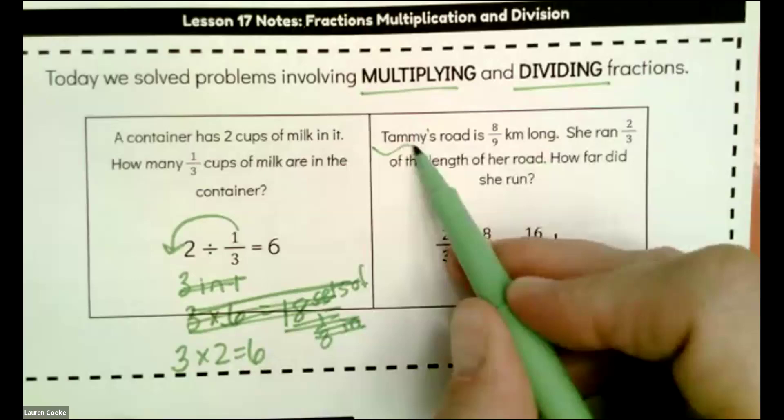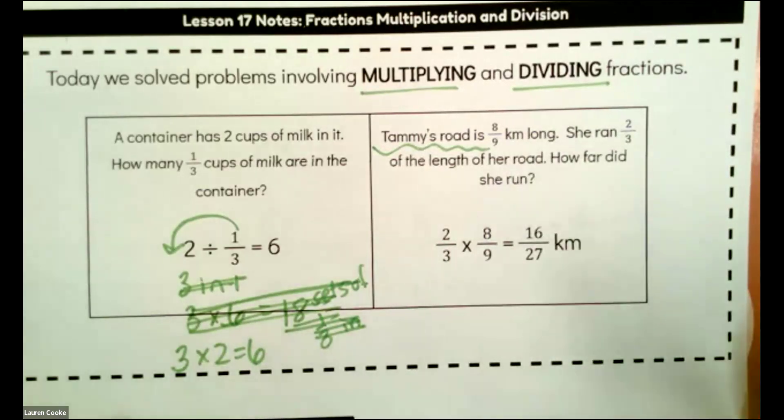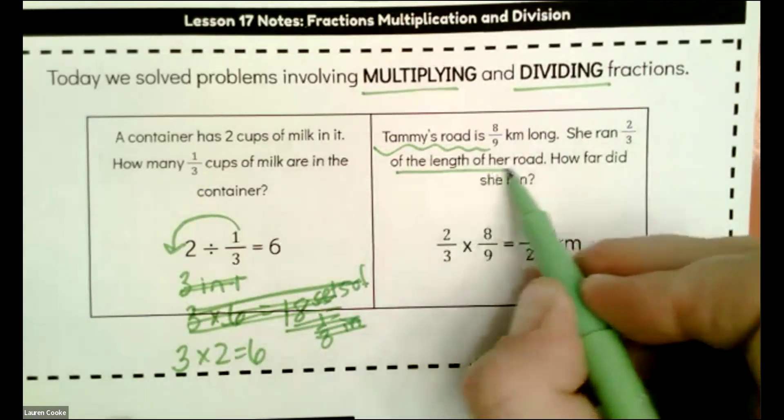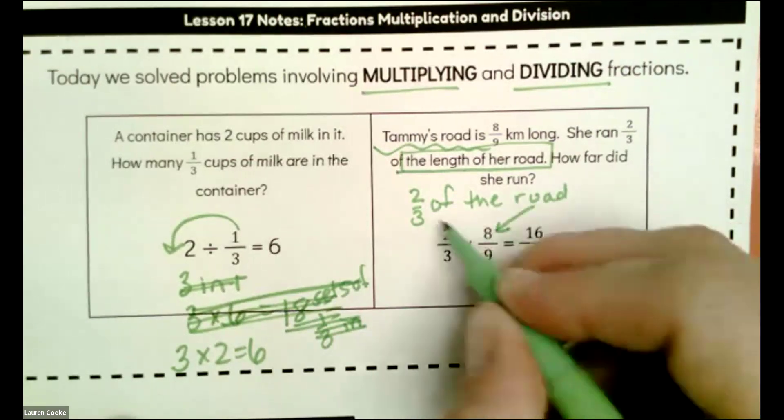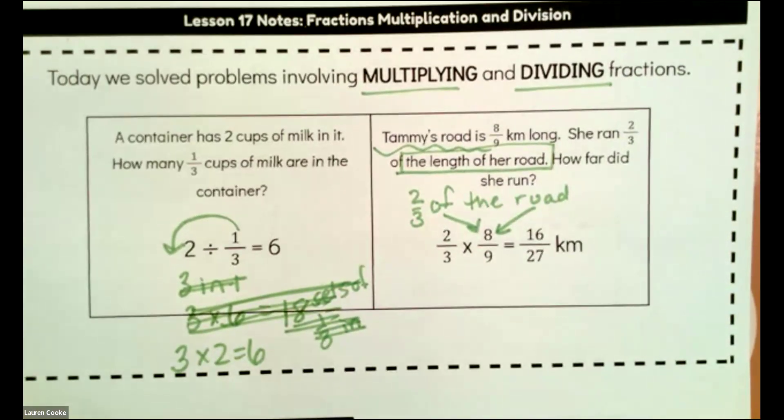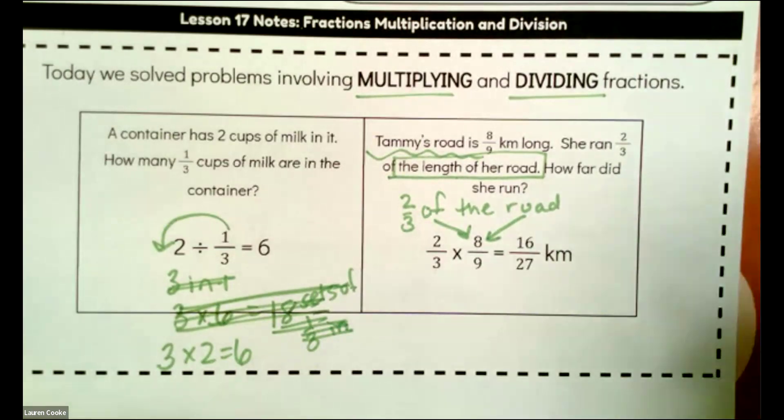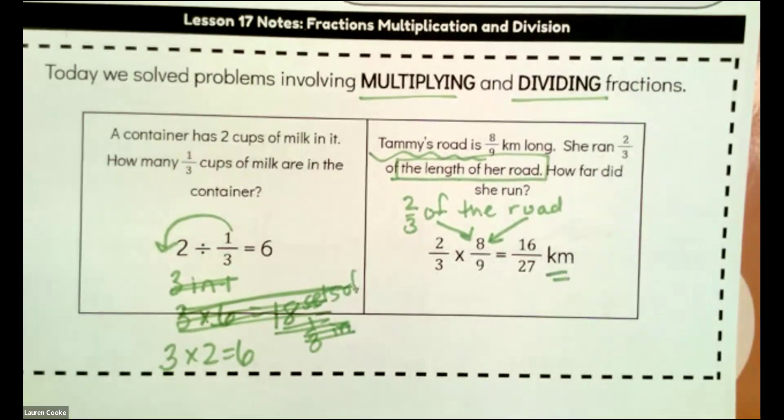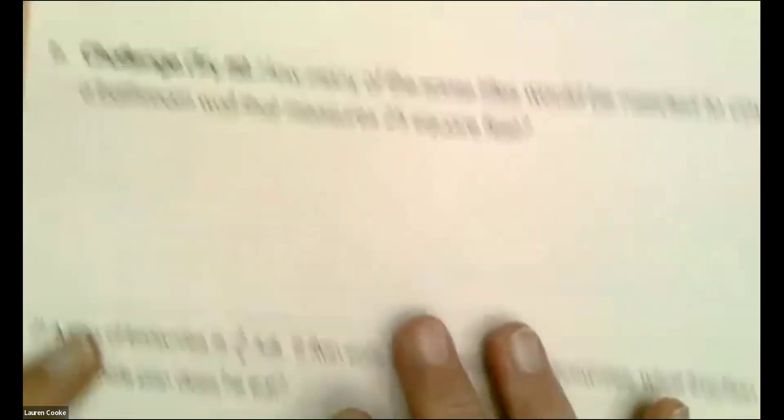Tammy's road is eight-ninths kilometers, so not yet one. And she's running two-thirds of it. I'm going to take the two-thirds and I'm going to see of the road, and I'm going to replace those words with the number. We use words to craft and then we drop in the numbers where they belong. So we have two times eight, three times nine, 16 twenty-sevenths of a kilometer. So not one yet. She's not running a whole kilometer yet.